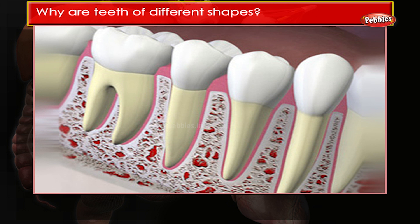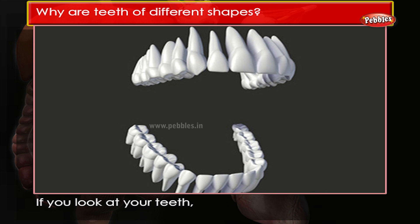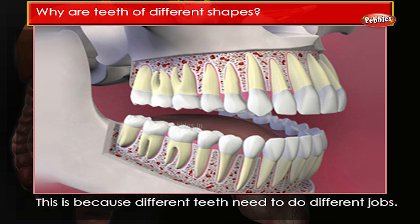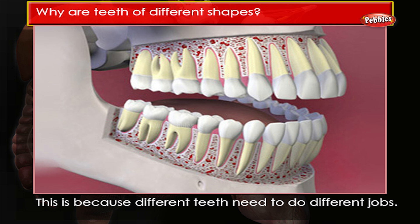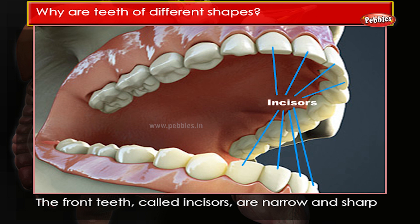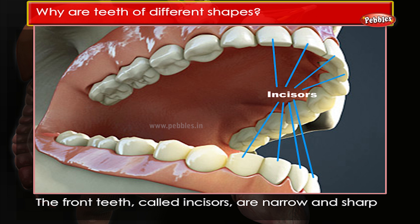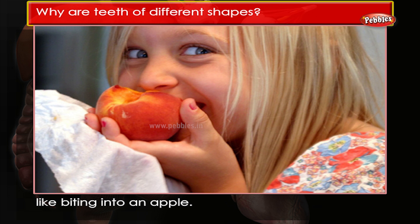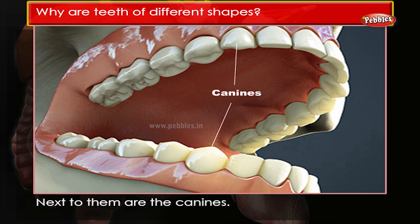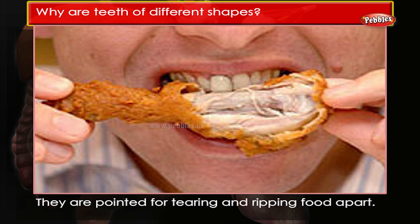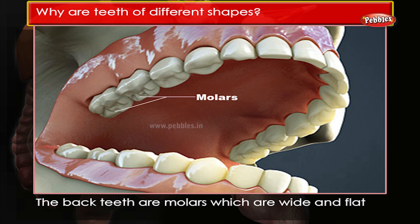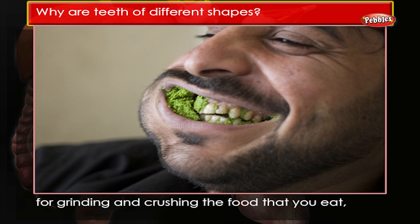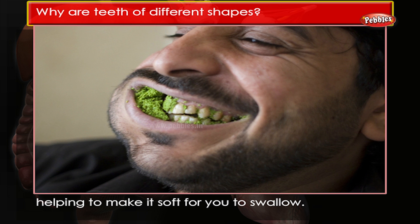Why are teeth of different shapes? If you look at your teeth you will see that there are three different shapes, because different teeth need to do different jobs. The front teeth, called incisors, are narrow and sharp and are used for biting and cutting food, like biting into an apple. Next to them are the canines, which are pointed for tearing and ripping food apart. The back teeth are molars, which are wide and flat for grinding and crushing the food you eat, helping make it soft for you to swallow.